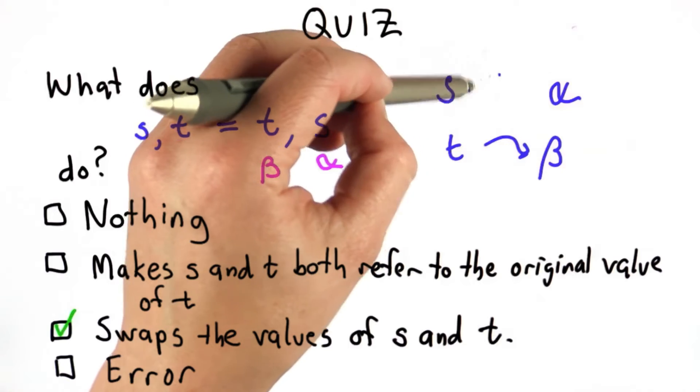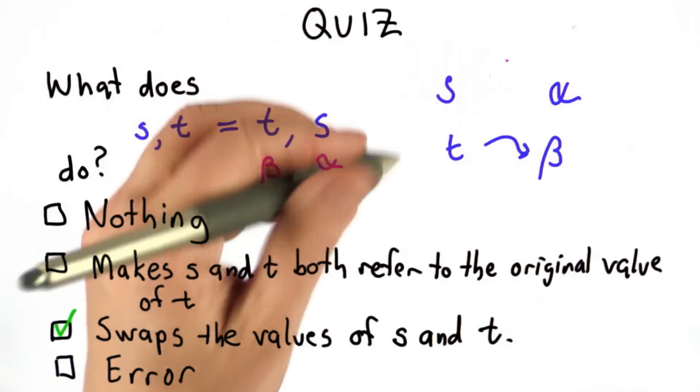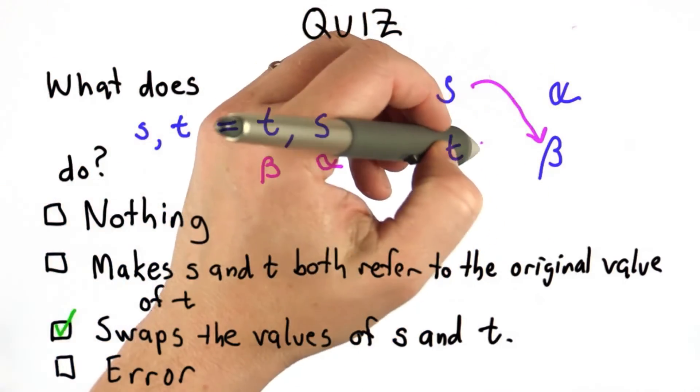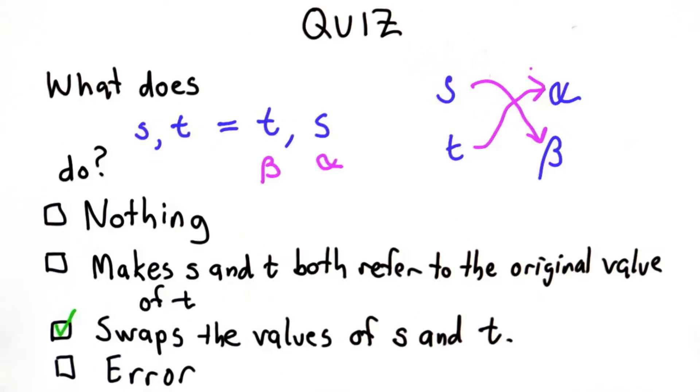And now we do the assignments. So now S will be changed to refer to the first value, which is the beta. And T will be changed to refer to the second value.